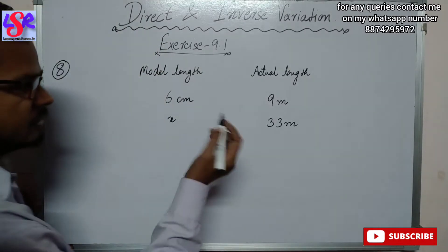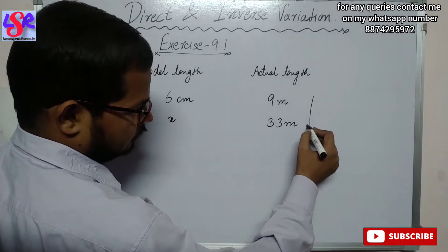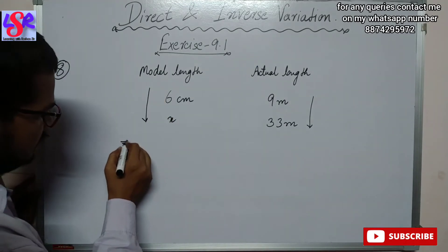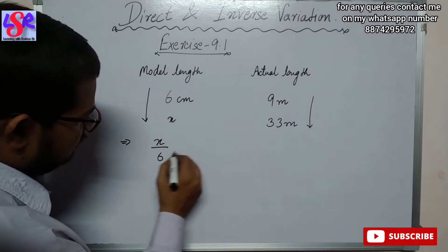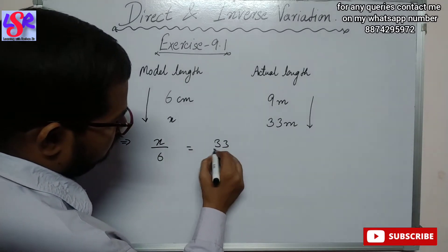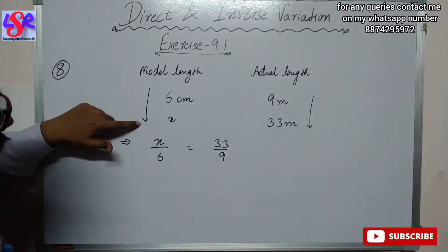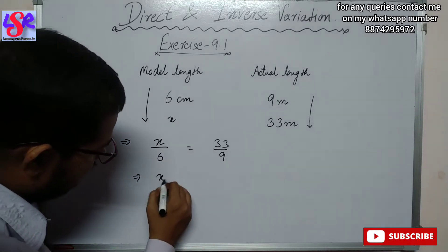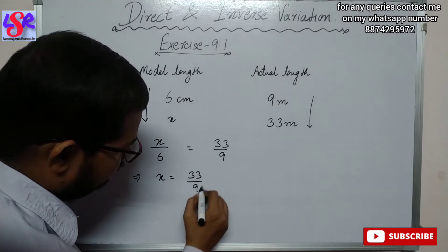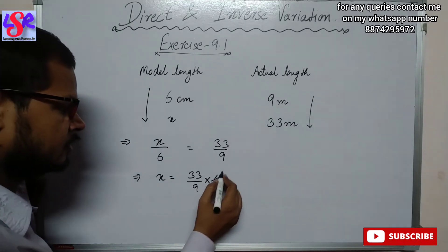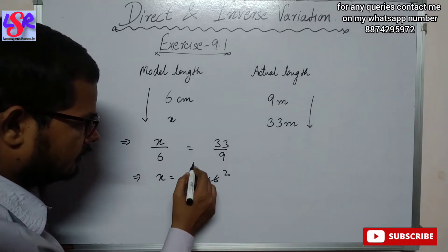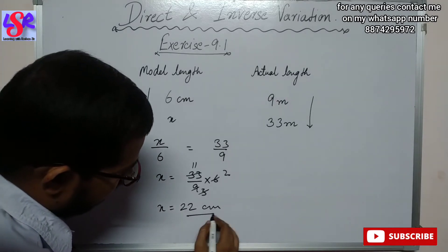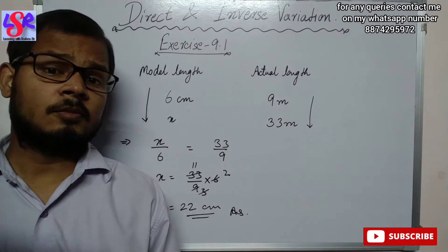This will be a direct variation, so we put the arrow in this direction. This can be written as x upon 6 equals to 33 upon 9, where we put the numerator in the arrowhead position. Solving for x: x equals to 33 upon 9 into 6. Simplifying — 9 divides 3 times, 33 divides 11 times — so x equals to 22 centimeter, which is the length of the model of the ship.